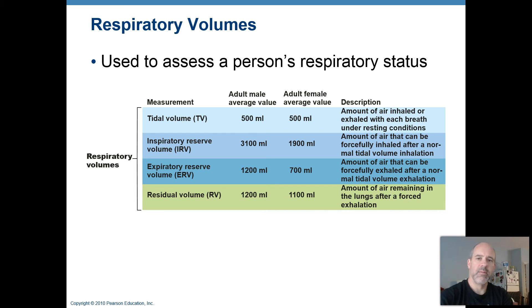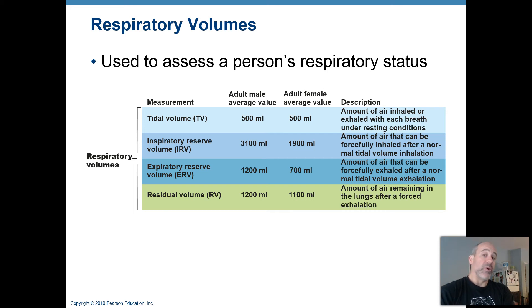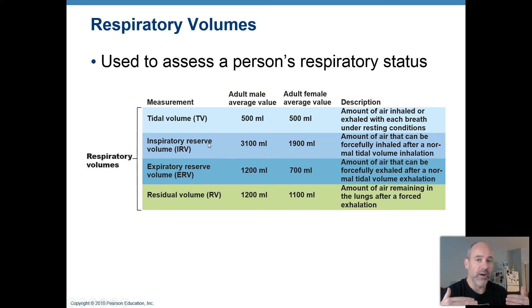Now take a normal inhale, and then inhale as deeply as possible after that. That extra air you took in above the normal inhalation is called your IRV, or inspiratory reserve volume — how much extra air you can take in above a normal inspiration. That's about 3,100 milliliters in a male and about 1,900 milliliters in a female.